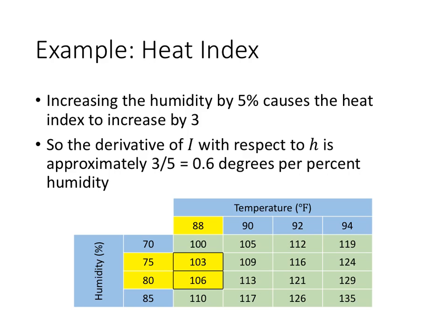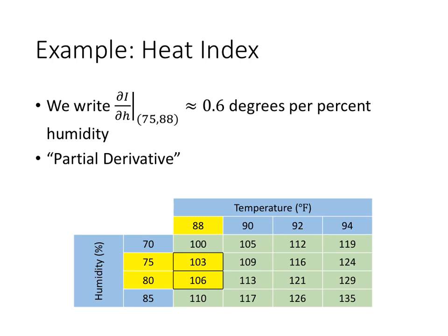So that's essentially a derivative, but it's a derivative with respect to H. We call this a partial derivative because we chose to take the derivative only with respect to H, not with respect to the temperature. We've got a fancy notation here: instead of a d for derivative, we use a curly d, actually called a del. So del I, del H evaluated at the point (75, 88) is approximately 0.6 degrees per percent humidity. This is called a partial derivative with respect to H.